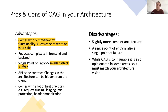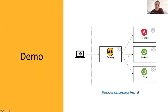Now I'll do a short demo of an application implemented with the gateway. Here's the architecture — it's all deployed on Azure, though that doesn't really matter for the demo. The client only talks to the gateway, and we have three backend systems: a frontend host on Azure Blob Storage, an Azure App Service for the backend API, and a special echo service for debugging and demonstration purposes.